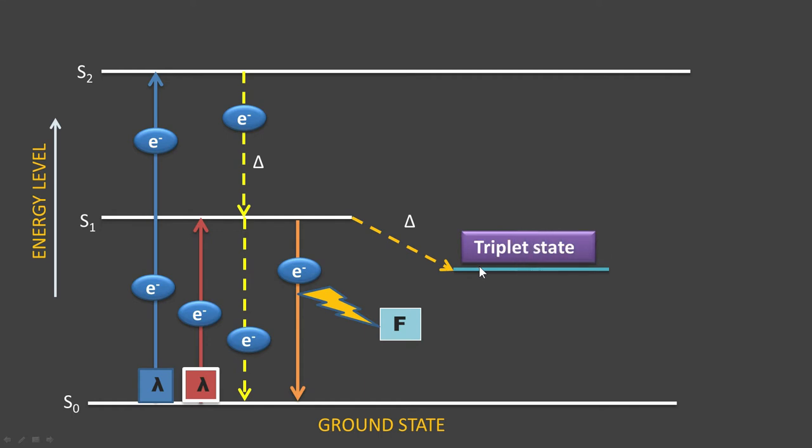is known as the triplet state. In the triplet state, when the electron comes back to the ground state, it releases its energy in the form of light, which is known as phosphorescence. The difference between phosphorescence and fluorescence is that fluorescence has quick emission of light, but phosphorescence is delayed emission of light.